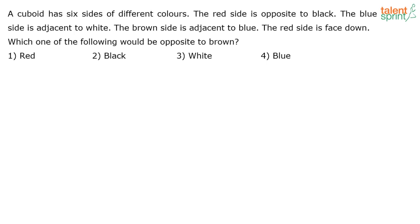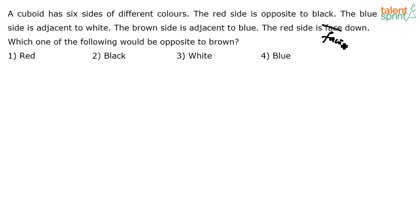Let's see what the correct answer is. The question here says a cuboid has six sides of different colors. The red side is opposite to black. The blue side is adjacent to white. The brown side is adjacent to blue. The red side is facing down. Which one of the following would be opposite to brown? Let's list down all the different colors.